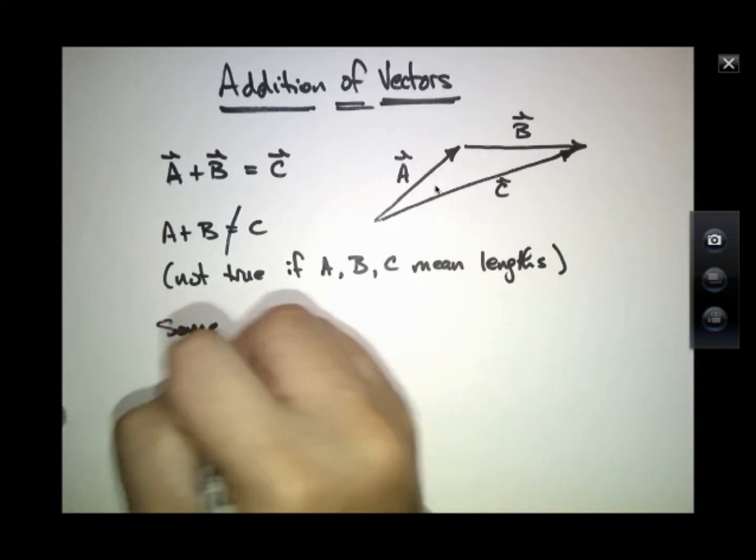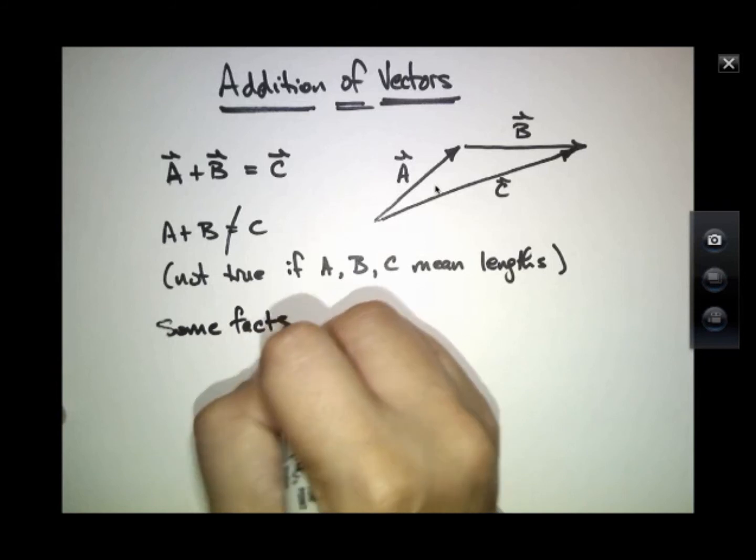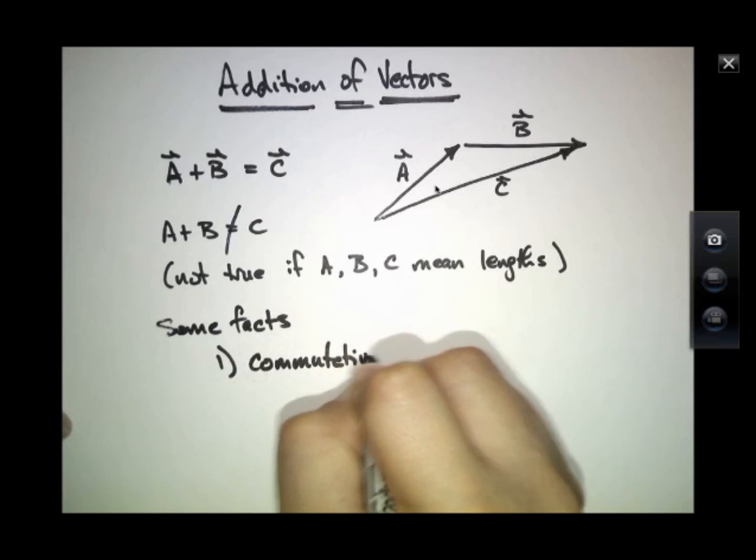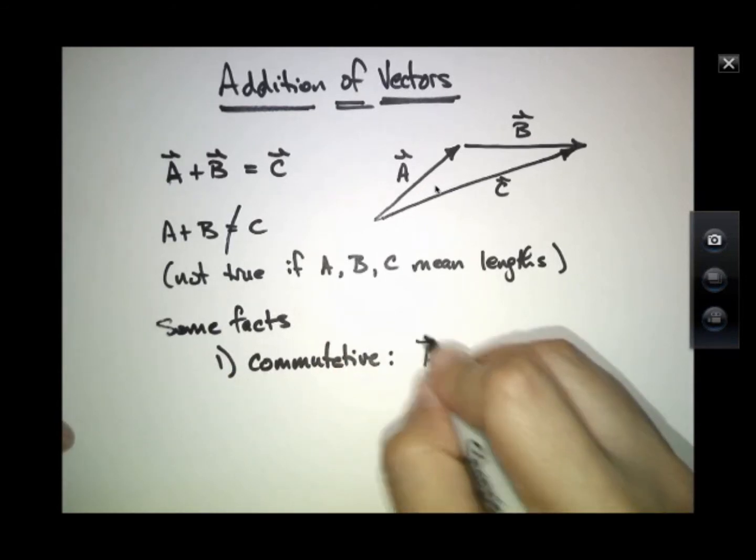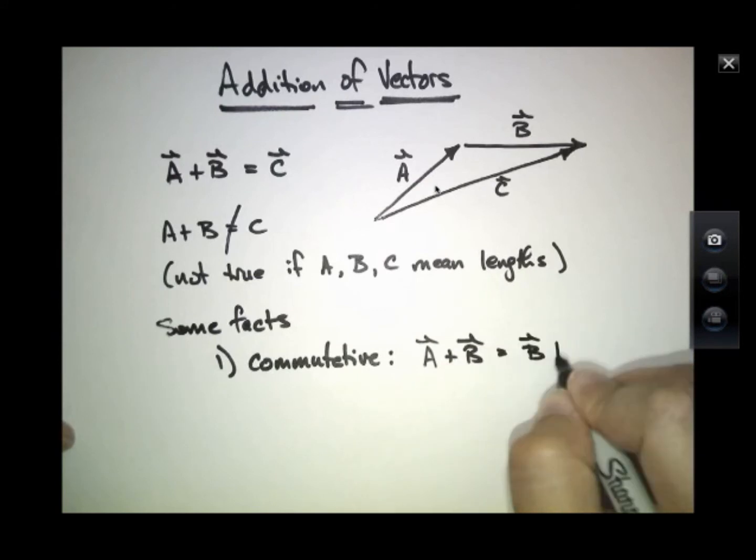There's some important facts about this kind of addition. It's what we call commutative. In other words, A plus B, the vector sum, is equal to B plus A.